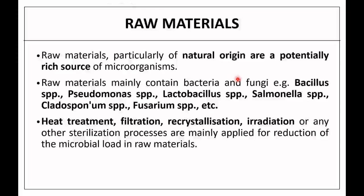Another source of contamination during manufacturing is raw materials. Raw materials of natural origin are a rich potential source of microorganisms, including Bacillus species, Pseudomonas species, Lactobacillus, Salmonellae, Cladosporium, and Fusarium. Contamination can be reduced by heat treatment, filtration, recrystallization, irradiation, or other sterilization processes.